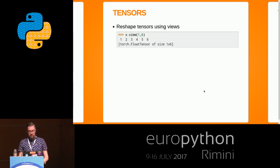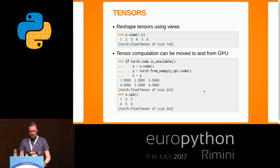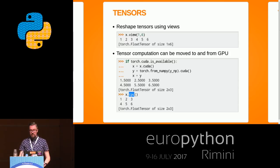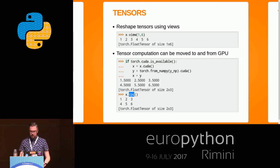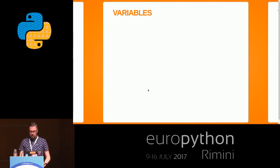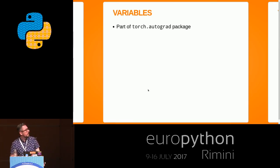You can also change the shapes of your tensors, which you'd expect. Another nice thing about PyTorch is you can be very explicit about where the computation happens. You can set up your tensor and explicitly specify it should be on the GPU, and likewise you can say you'd like to move it to the CPU. It's very explicit — you know where things are being moved — and you have to be careful with your copies, but it's a nice feature.